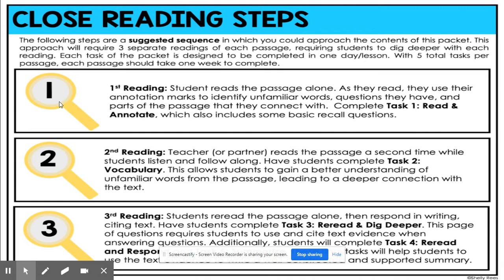First, ladies and gents, you're going to look at the Ruby Bridges passage and read it alone. You can silent read it or whisper read it — sit at your desk and read it out loud, but quietly. As you read, you will use annotation marks to identify unfamiliar words, questions you have, and parts of the passage you connected with.